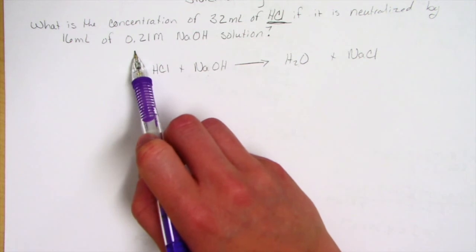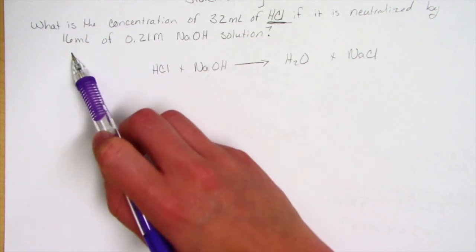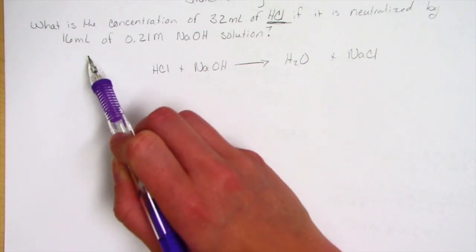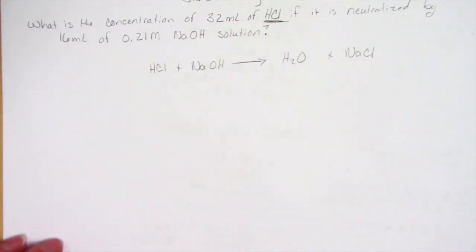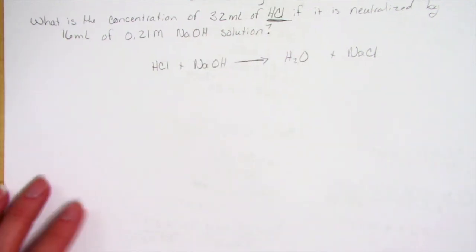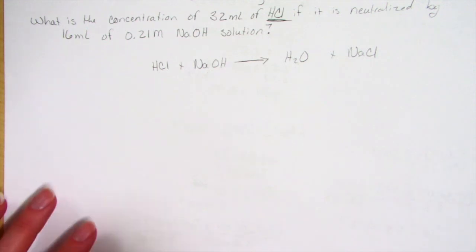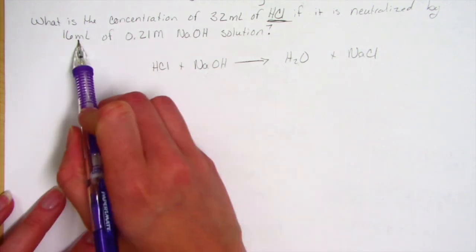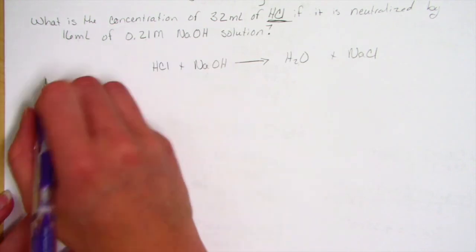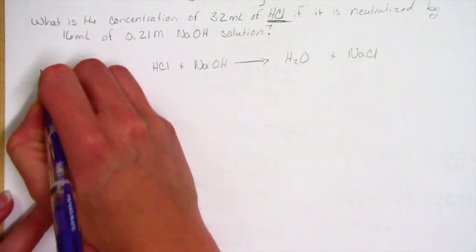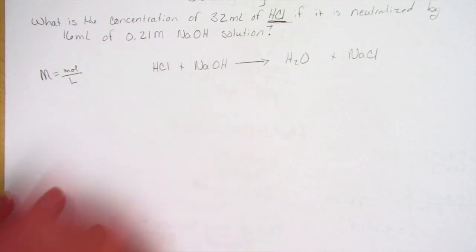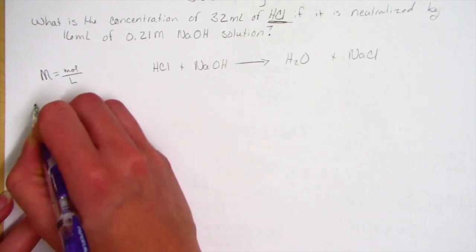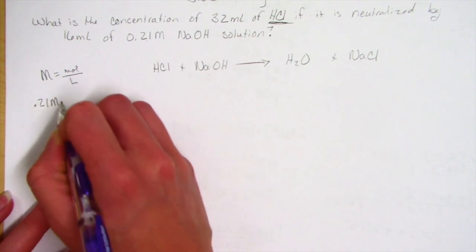To do that, we used a 0.21 molar solution and we were able to use 16 milliliters of that. The first thing we need to figure out is the moles of NaOH that we used between the 16 milliliters and the 0.21 molar. We're going to use the equation M equals moles over liters.